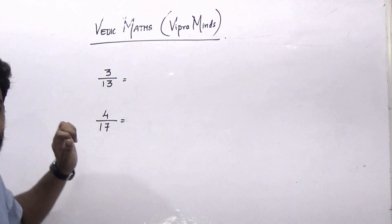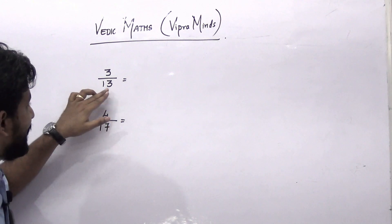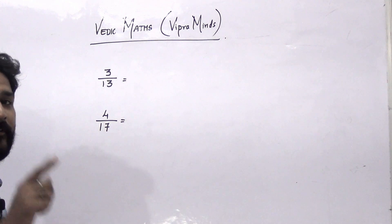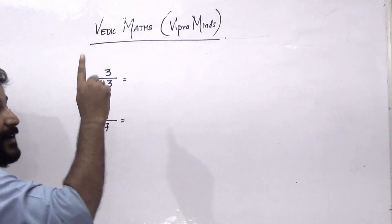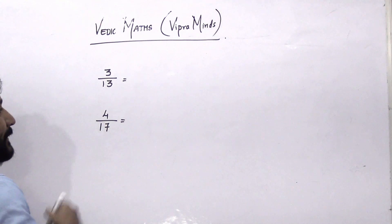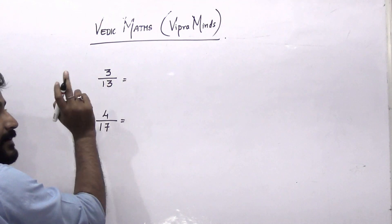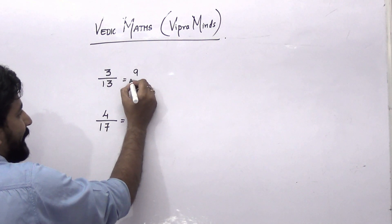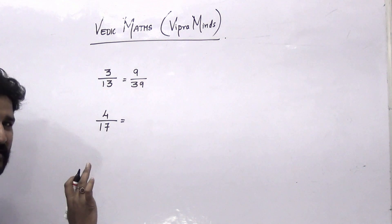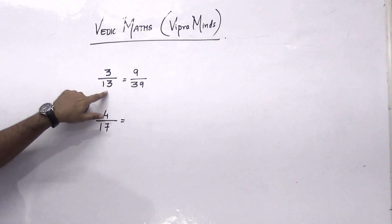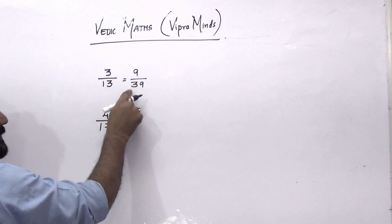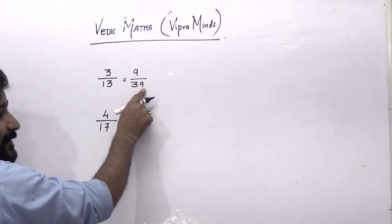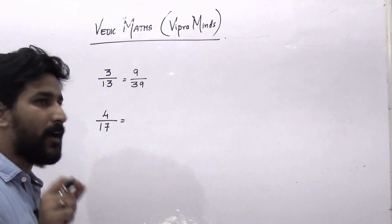So it's 3 by 13. What we are going to do is multiply 13 by such a number so that the denominator will end with 9. So we multiply 13 by 3 — 13 into 3 is 39. You have to multiply both numerator and denominator by 3, so it will become 9 divided by 39. Both fractions are equal; we have just modified it. So now the denominator or divisor ends with 9, so we use the same method from the last video.